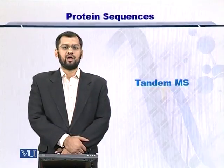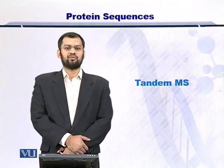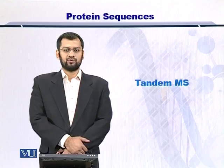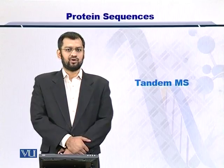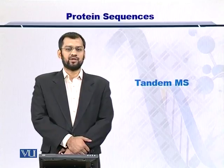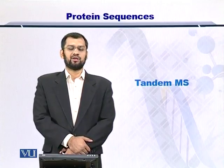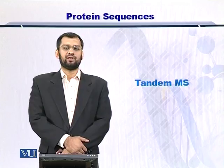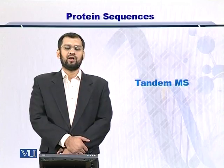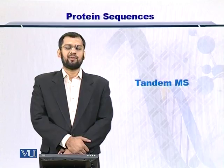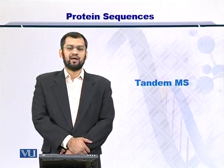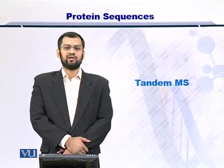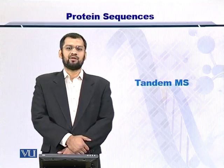Dear students, once you have measured the molecular weight of a protein or a peptide using MS1, you would want to score it. And if your score does not give you a deterministic conclusion as to which protein it is and the identity of the protein in the sample still remains unclear, then you can fragment that protein within the mass spectrometer's chamber and do another analysis. Such follow-up analyses are called tandem MS, or MS followed by another MS.